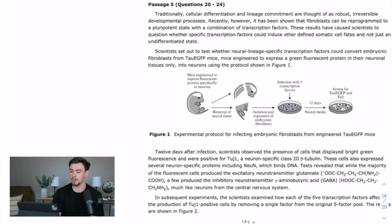So at the beginning, it's talking about cell differentiation. Traditionally, cell differentiation and lineage commitment are thought of as robust, irreversible developmental processes. The only thing that I really remember from like a general biology course about that is cell diff. No relationships there.